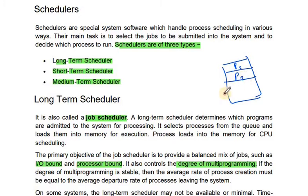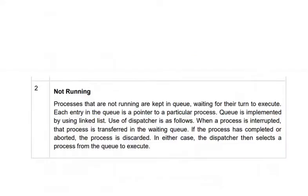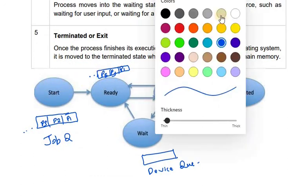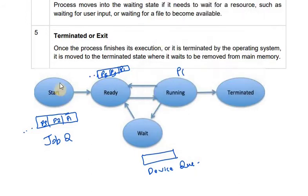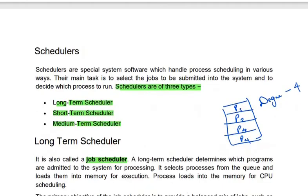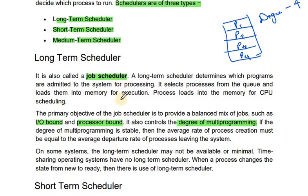The long-term scheduler controls the degree of multiprogramming. The degree of multiprogramming means the number of processes present in memory — for example, P1, P2, P3, and P4. If memory has 4 processes, the degree of multiprogramming is equal to 4. The long-term scheduler helps to increase the degree of multiprogramming. It is associated with the start-to-ready transition in the process life cycle. It is also called the job scheduler.